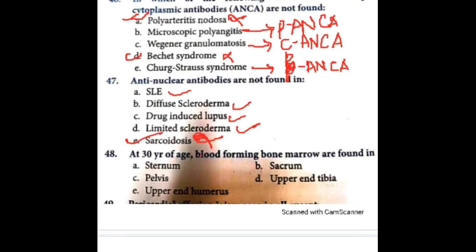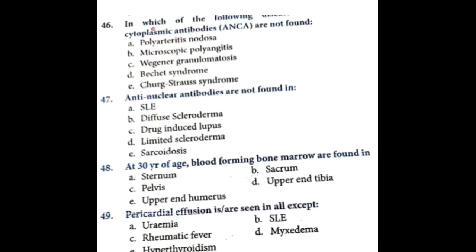At 30 years of age, blood-forming bone marrow is found in the sternum, sacrum, pelvis, upper end of tibia, and upper end of humerus. In adult life, hematopoietic bone marrow is mainly confined to the central skeleton and also to the proximal ends of femur, tibia, and humerus.